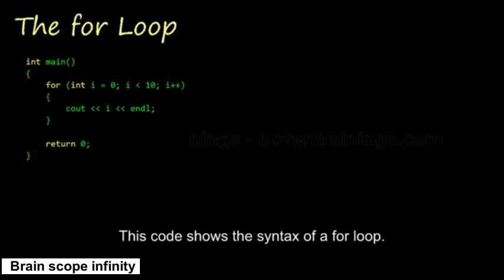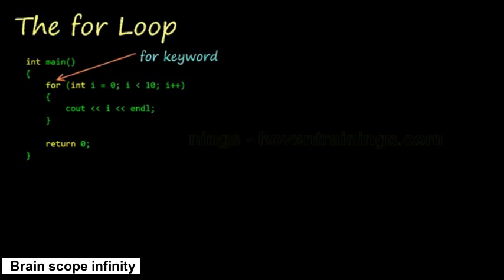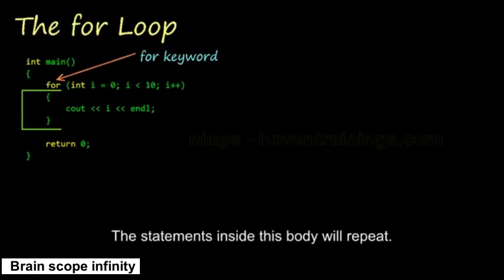This code shows the syntax of a for loop. This loop is written with a for keyword. This is the body of the loop. The statements inside this body will repeat.